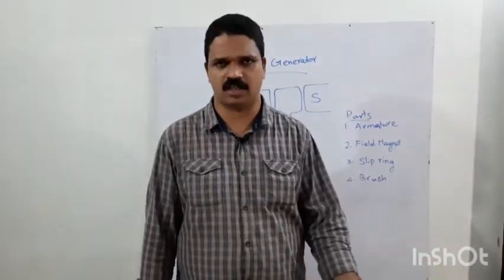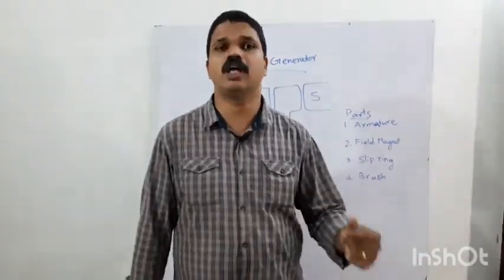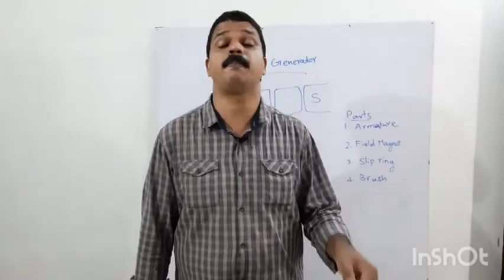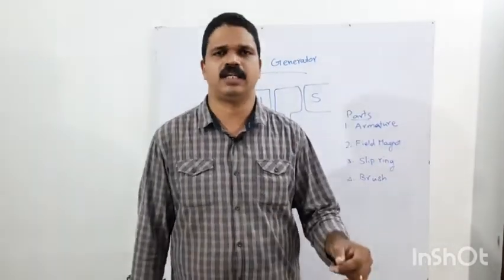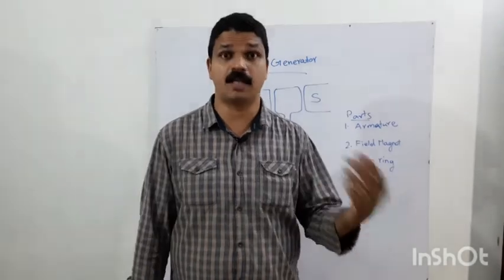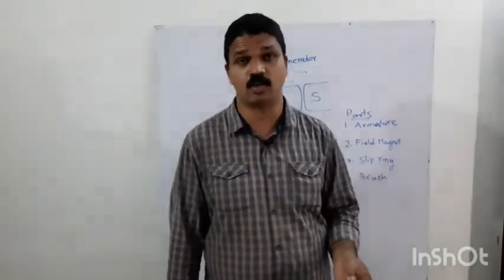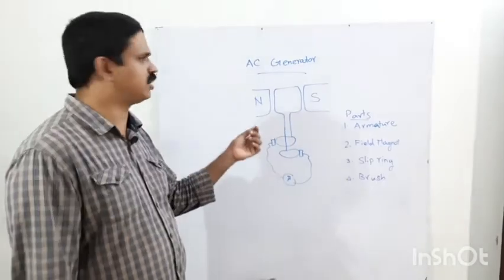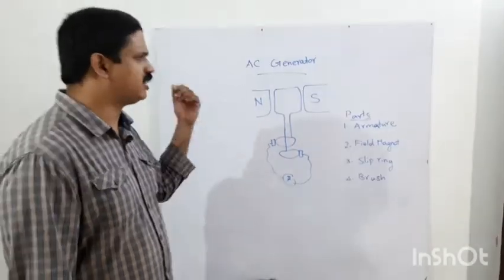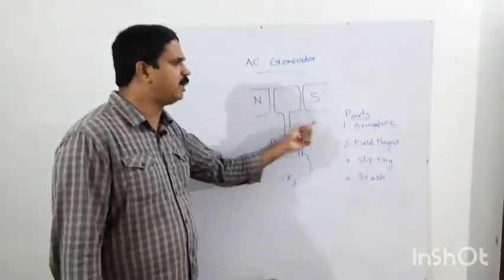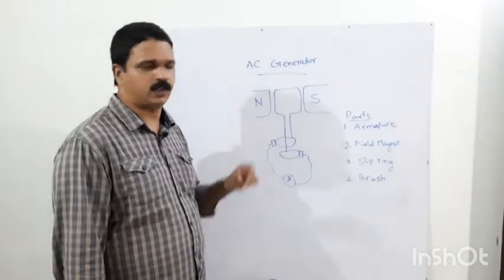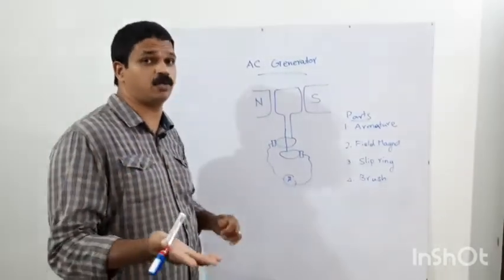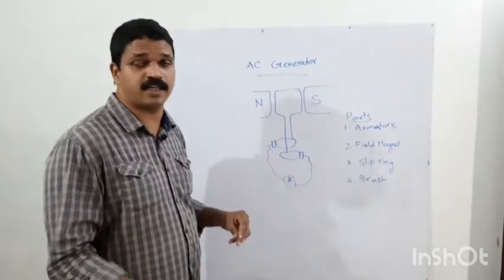This principle is electromagnetic induction. Now, how are we doing this? We need to know how to generate the main parts. There are two types of generators: AC generator and DC generator. We are now discussing the AC generator.